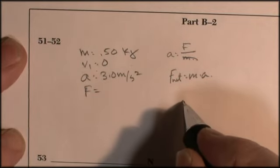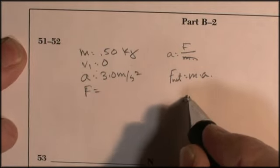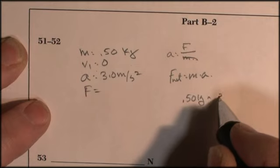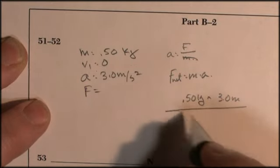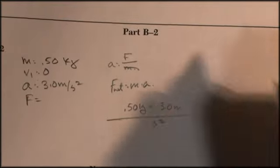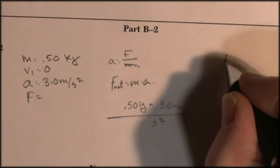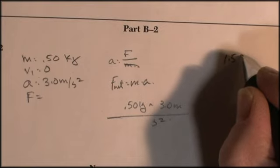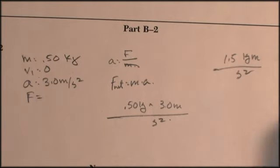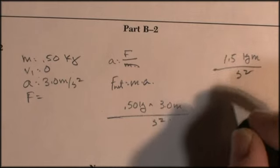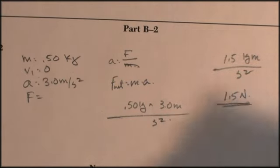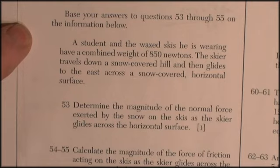So we substitute with units, 0.50 kilograms times 3.0 meters per second squared. And I'm going to end up with 1.5 kilogram meters per second squared, which is an acceptable unit, or 1.5 newtons, which is also the acceptable unit.